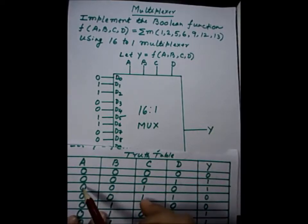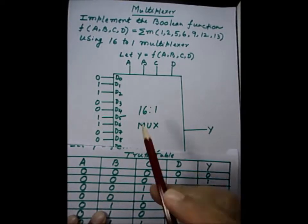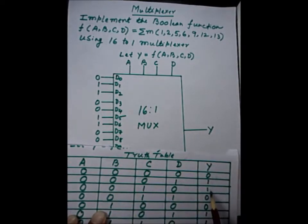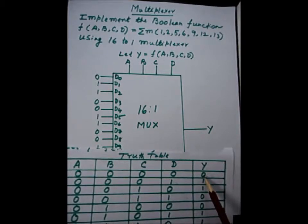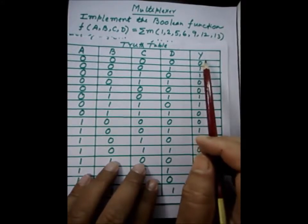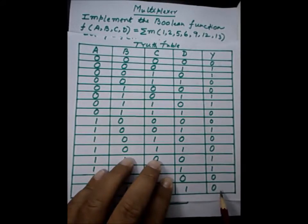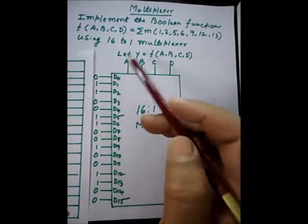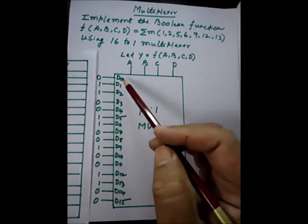Another example: if A=0, B=0, C=1, D=0, truth table output is 1, and the multiplexer output is D2. Therefore, if we assign D2=1, we get the desired output. So whatever we get in the truth table, we serially assign those values to D0, D1, D2, D3, D4, D5 and so on up to D15. You can see that the truth table outputs are assigned serially to D0 through D15.